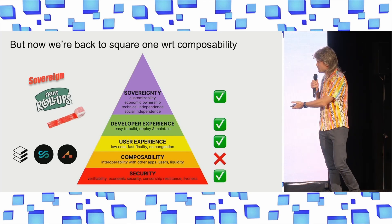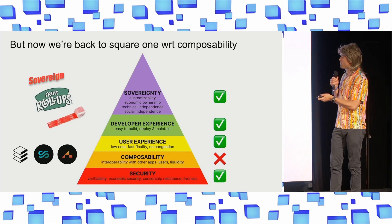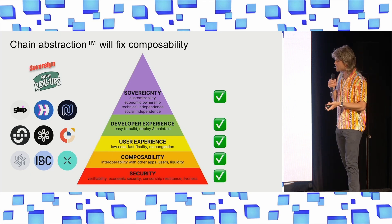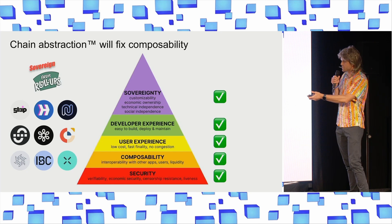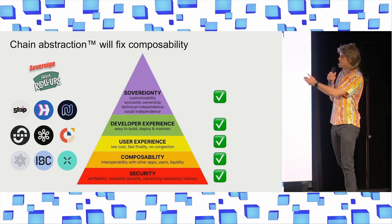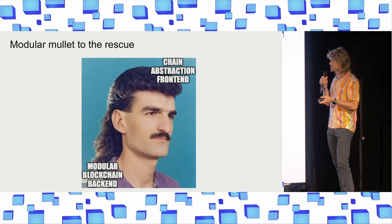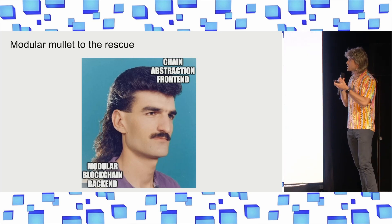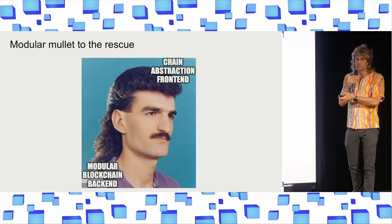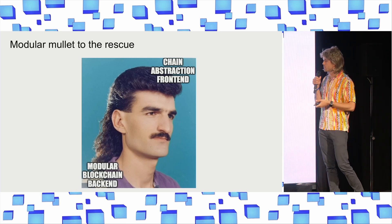But the issue of sovereign rollups is that now we've given up that composability benefit of L2s. If this weren't solvable, they might not be viable. Fortunately, there's a whole movement called chain abstraction that is solving composability and solving the fragmentation of different rollups. There are tons of different projects building — different bridge interfaces, bridging providers, asset-issuing chains like Noble, intent protocols, and APIs like Skip that integrate this all into one easy user interface. And the promise here is that we can have this modular mullet — that's why I'm wearing the mullet wig today — a unified, seamless user experience on the front-end powered by chain abstraction that abstracts away all the complexity and fragmentation of the underlying modular blockchain backend.